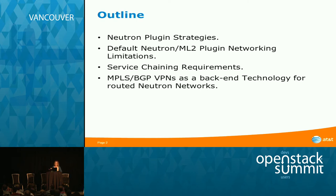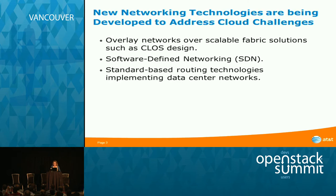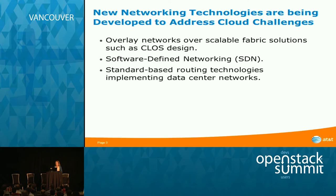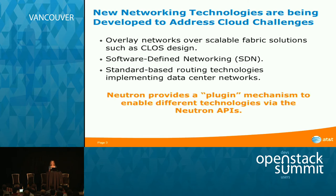We are all familiar with networking technologies developed to address cloud challenges like scaling, manageability, and fast deployment of applications. The three main ones are: overlay networks over scalable IP fabric solutions like Clos design; SDN, which provides programmable forwarding planes; and standards-based routing technologies implementing data center and overlay networks. This is all possible because of how Neutron was designed.